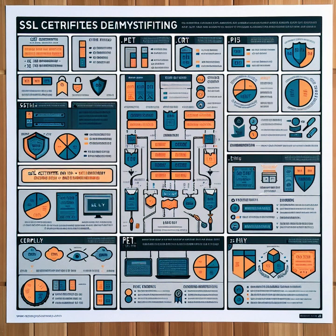Moving on, we have CRT files. These files specifically contain the public key portion of an SSL/TLS certificate, including important details like the domain name, validity period, and issuer's information. It's important to note that CRT files usually do not include the private key.